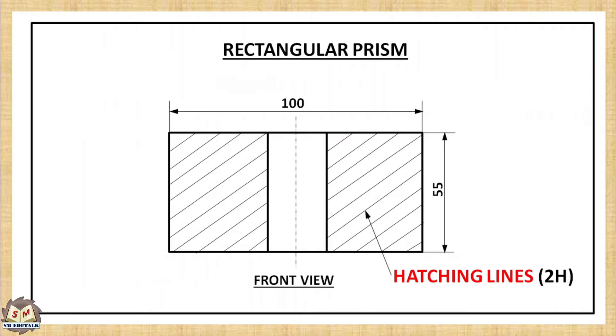If you want to make the invisible hole visible, cut the prism into two halves and remove the front half. Now you can see the rear half of rectangular prism with a visible hole. Here, the cut sections except hole are hatched. That is, cut sections are shown by hatched lines. They are drawn by 2H pencil.